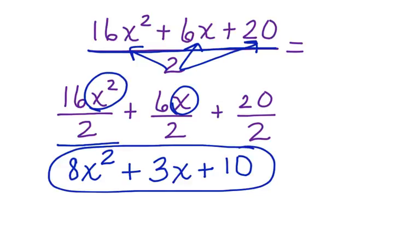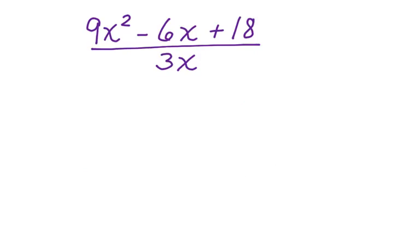Let's look at another one. 9x squared minus 6x plus 18 divided by 3x. Again, let's distribute this 3x with each term in the form of division.